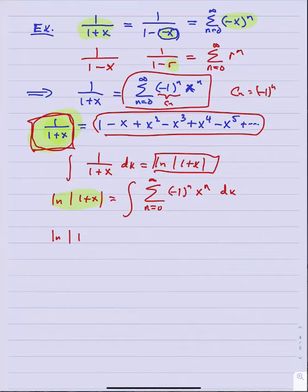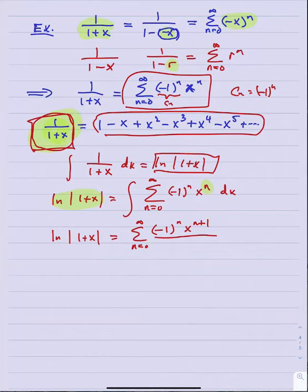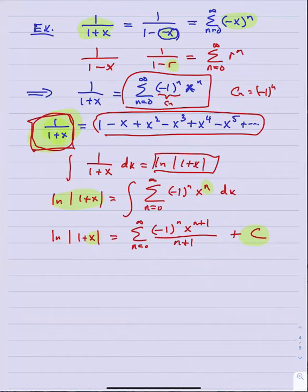When I integrate the right side term by term using the power rule, I get n equals zero to infinity negative one to the n times x to the n plus one divided by n plus one, plus c. Now, the same game we always play: if I take the antiderivative of a function, can I figure out a particular value for that constant? We make a judicious choice for x — usually x equals zero.